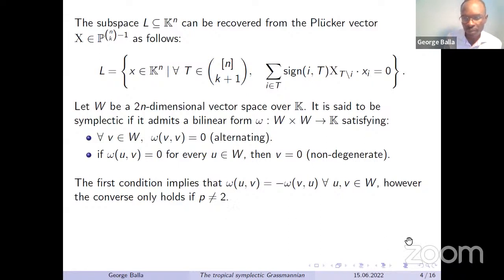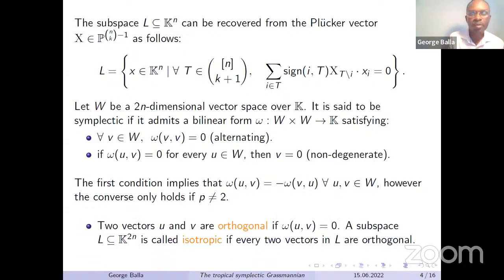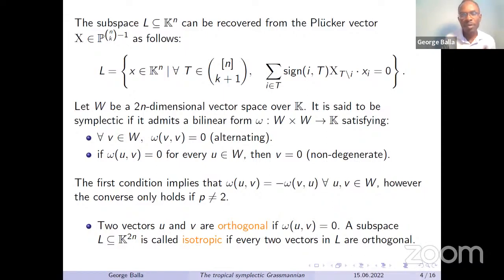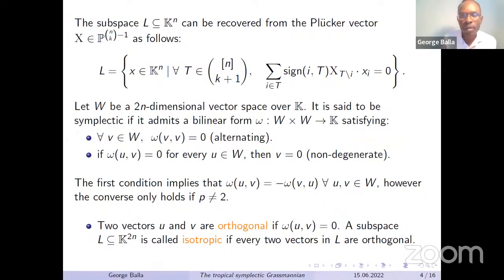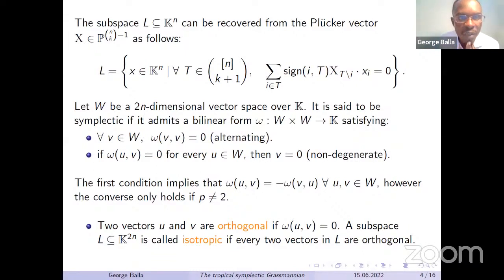This is why, as we will see later on, even when we go to the tropicalization, things will tend to depend more on the field and its characteristic. We have a notion of orthogonality: when you have a bilinear form, two vectors u and v are said to be orthogonal when ω(u, v) = 0. A subspace L in k^{2n} is called isotropic if every two vectors in L are orthogonal. Here I've written k^{2n} after identifying our vector space W with k^{2n} by fixing a basis.